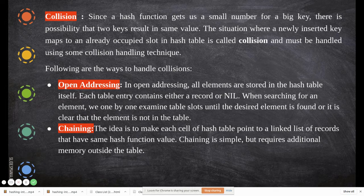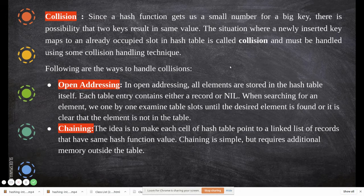When a key is generated, it finds its place in the array. When another key is generated that has the same value, it tries to occupy the same place. If we keep placing in the next space, there will be no matching between the key and the place where it has to go. Since the hash function gives us a small number for a big key, two keys can result in the same value.